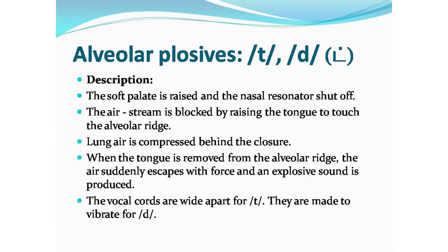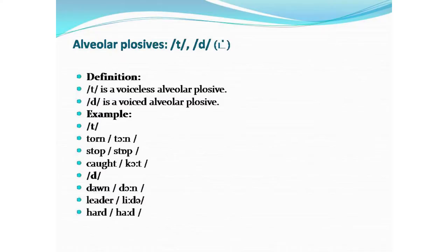The vocal cords are wide apart for T and they are made to vibrate for D. T is a voiceless alveolar plosive. D is a voiced alveolar plosive.